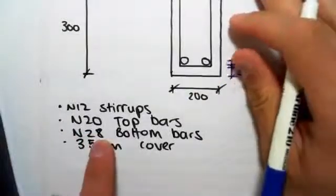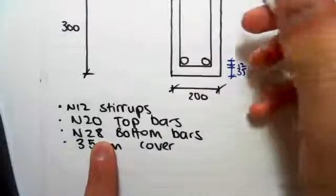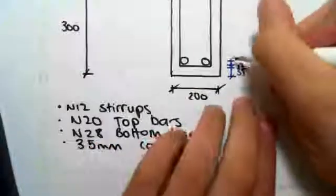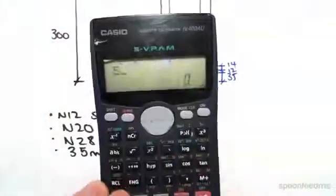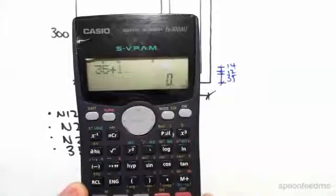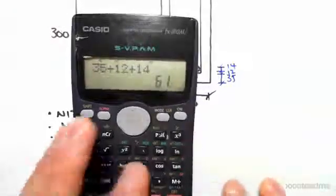And to the center of that bar. So we have N28 bars at the bottom, so the distance to their center will be half of that, the radius, which will be 14 mils. So if we were to work this out we'd get 35 plus 12 plus 14, so 61.